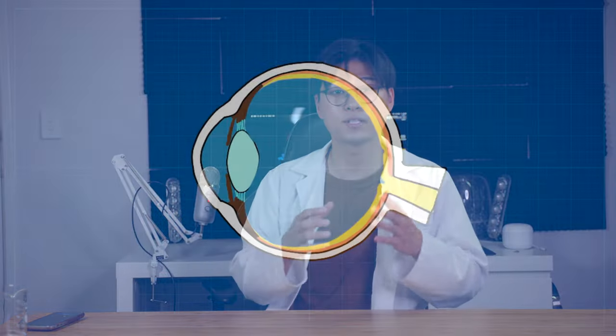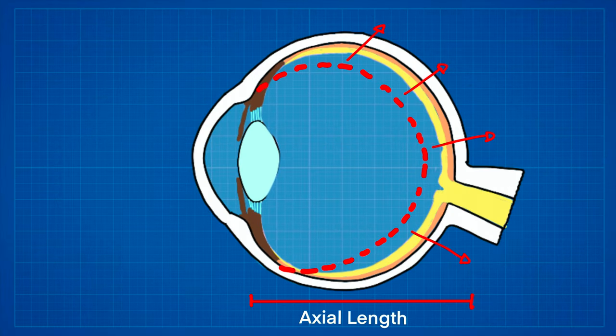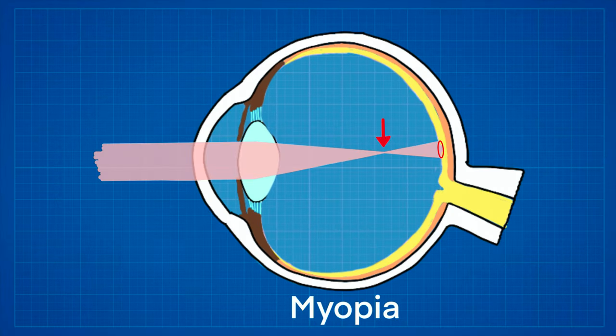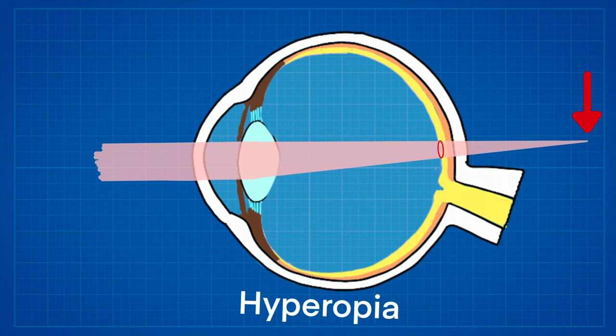Similar to myopia, there is a mismatch between the optics of the eye and the axial length of the eye. But unlike myopia, hyperopia goes the other way and focuses light behind your retina.